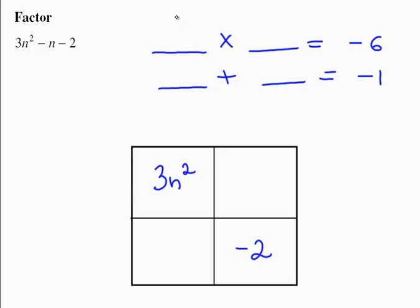So 3 and 2 will work. We just have to think about the signs. If they add up to negative 1, 3 is the one that has to be negative. That means the two terms that got combined were negative 3n and positive 2n. And now I need to factor.